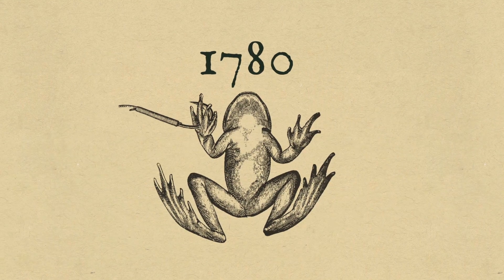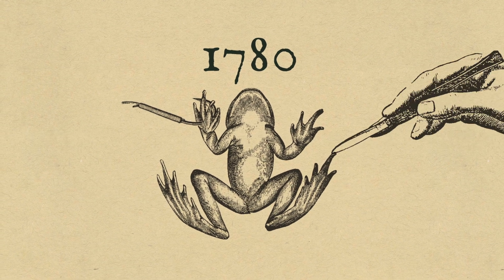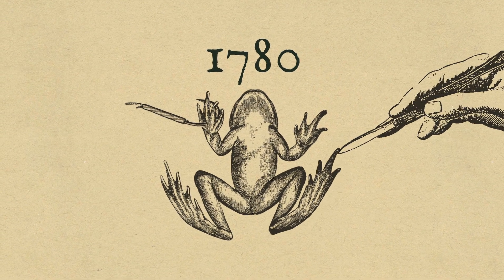In 1780, the Italian scientist Luigi Galvani was dissecting a frog stuck to a brass hook. As he touched his iron scalpel to the frog's leg, the leg twitched.